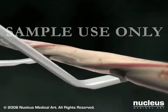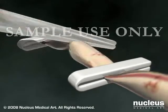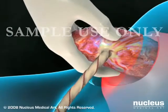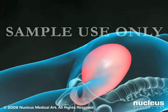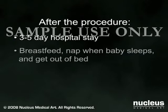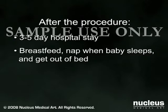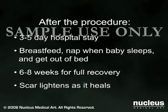Your doctor will then clamp and cut the umbilical cord, gently remove the placenta, and tightly suture your uterus and abdomen. This typically takes about 45 minutes. The hospital stay after a cesarean section is usually three to five days. During this time, you will be encouraged to breastfeed, nap when the baby sleeps, and get out of bed often. While most patients are able to take care of their new baby soon after the procedure, full recovery may take six to eight weeks. Your scar will lighten as it heals.